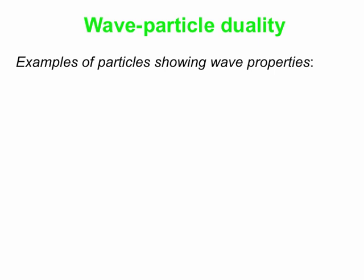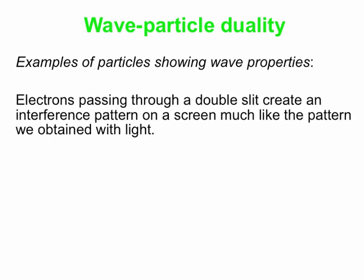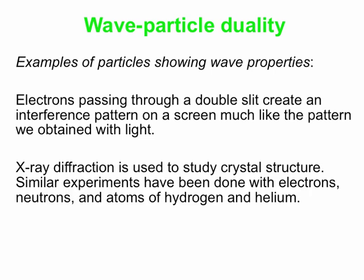So back to wave-particle duality again, now from the particle perspective — things we normally think of as behaving like particles but showing wave properties. Examples include electrons: you can pass them through a double slit and they create an interference pattern on a screen, much like the pattern you can obtain with light. Basically the only way to explain this is that the electrons kind of pass through both slits of the double slit simultaneously and interfere with each other to create this pattern. They certainly do not act like little balls being fired through the slit. We can also use x-ray diffraction, often used to study crystal structure — that's diffraction done with photons, x-rays. You can also do electron diffraction, neutron diffraction, and you can even diffract atoms of hydrogen and helium. Diffraction is a wave phenomenon.